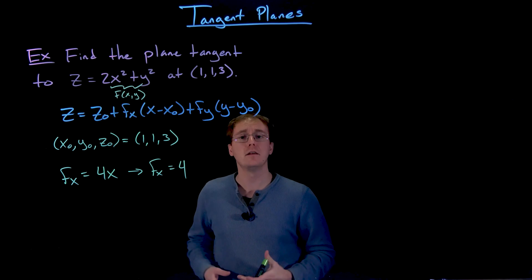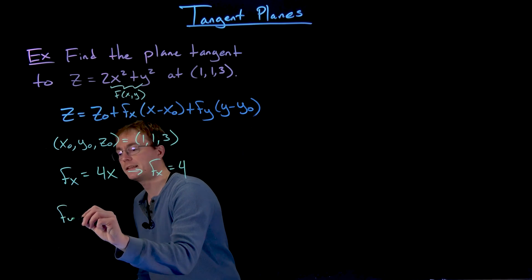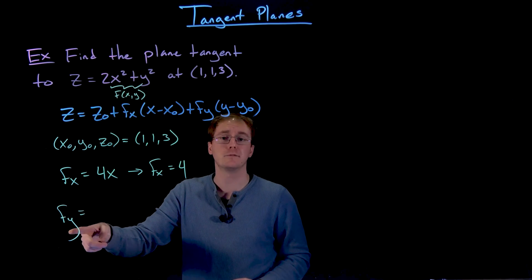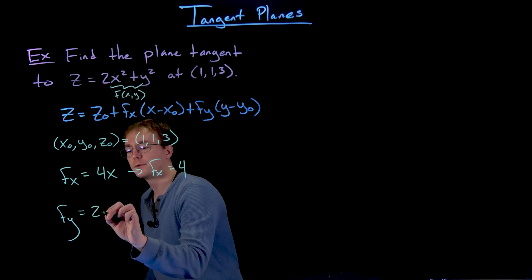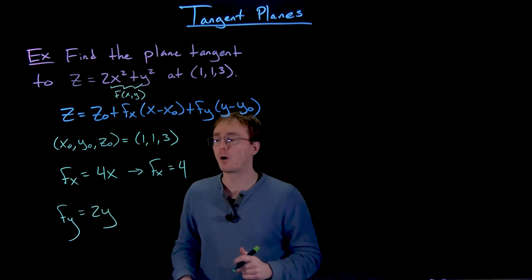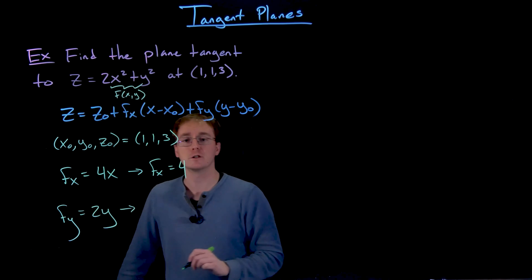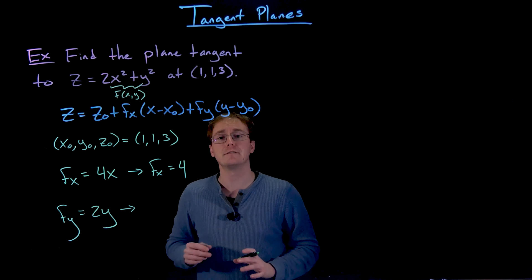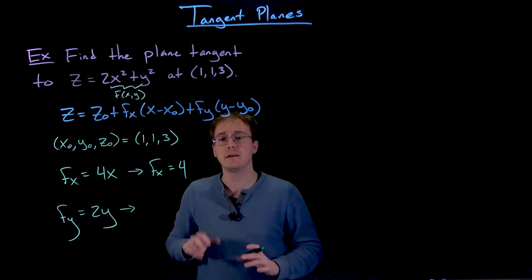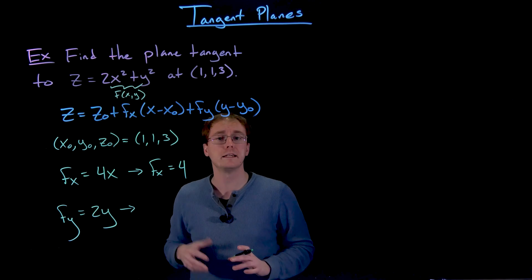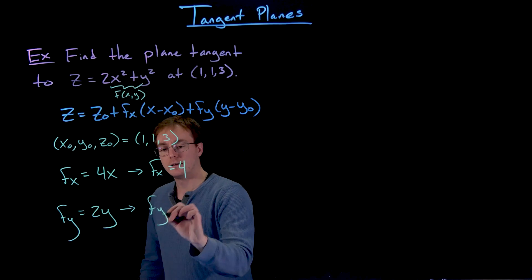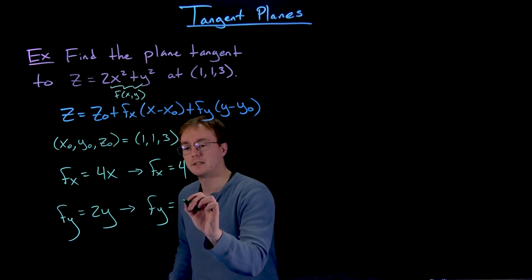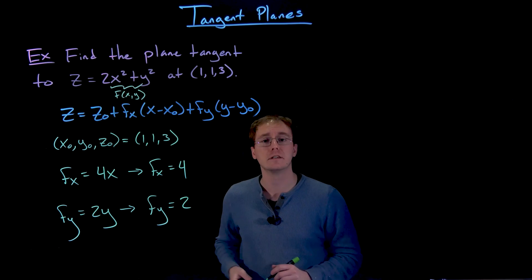Now we repeat the process with respect to y. Starting with our surface 2x squared plus y squared and taking the partial derivative with respect to y gives us 2y as the general partial derivative. For our tangent plane's equation, we need this evaluated at the point of interest. Plugging in y equals 1, we find that the partial derivative of f with respect to y at our point of interest equals 2.